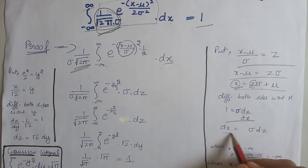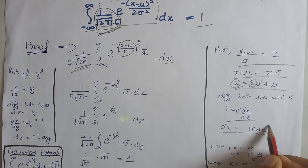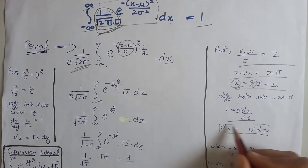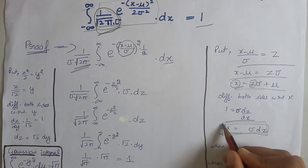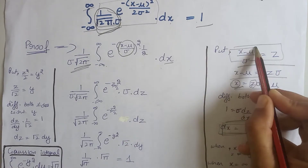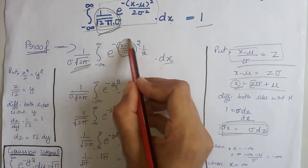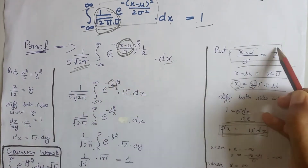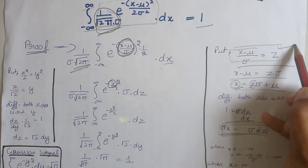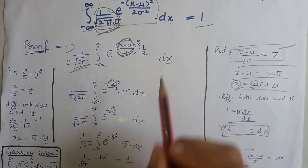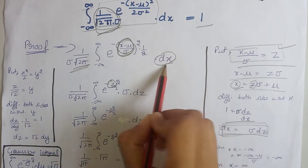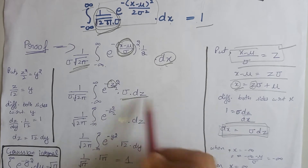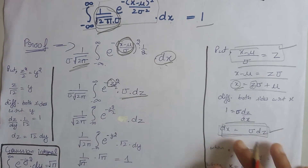From here, we get the value of dx in terms of dz. That means now by using this equation and this equation, we put here only z because of this equation, and then we put at the place of dx sigma dz because of this equation.